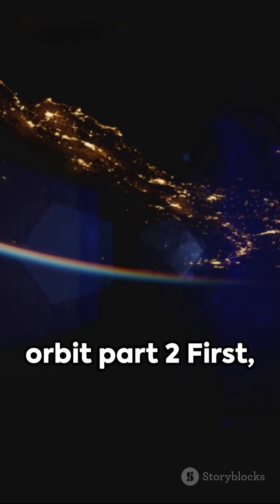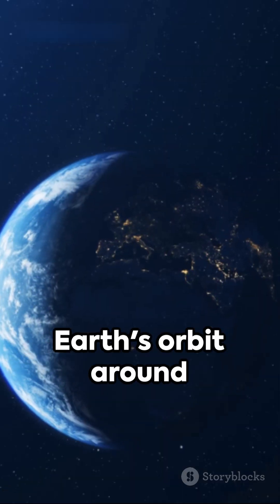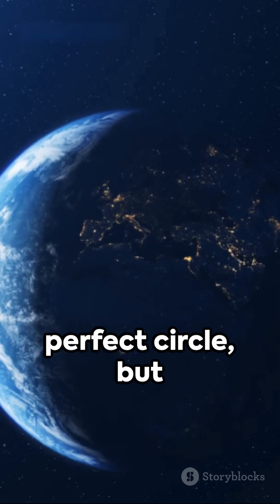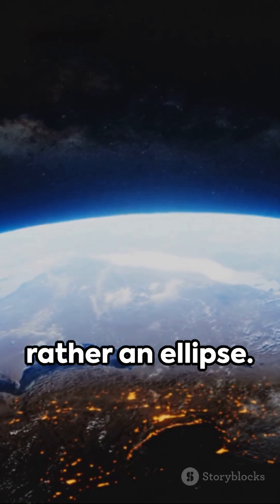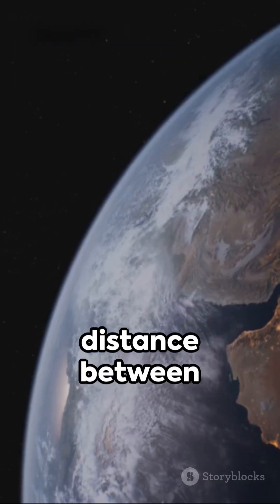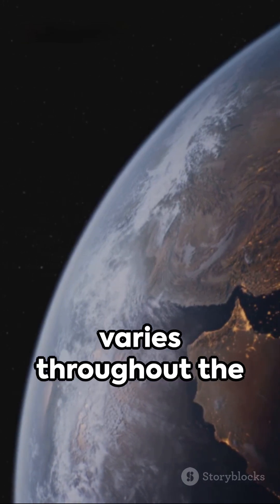5 Intriguing Facts About Earth's Orbit, Part 2. First, Earth's orbit around the Sun is not a perfect circle but rather an ellipse. This means that the distance between Earth and the Sun varies throughout the year.